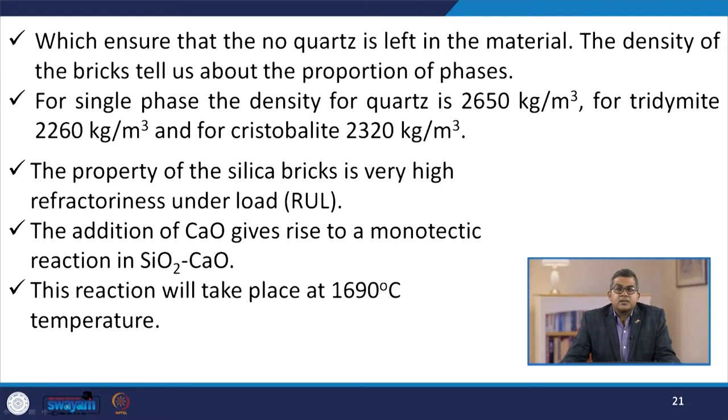For manufacturing silica bricks, raw materials are crushed to angular particles, which helps in better packing during compaction. Then lime water containing 1.7% CaO is added for bonding. The lime water aids compaction by imparting plasticity, and then dry pressing is carried out to get a green compact. Firing is then performed at 1500°C for at least 2 weeks, during which various volume changes take place.